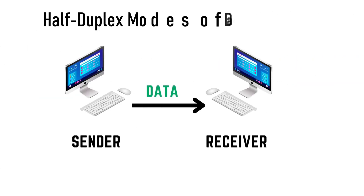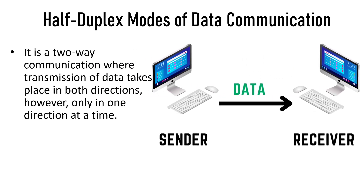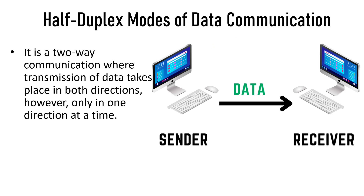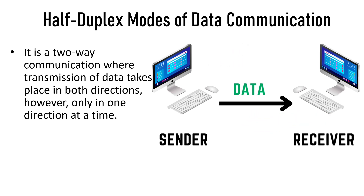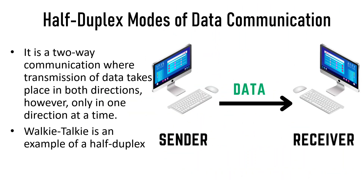Half duplex is a two-way communication where the transmission of data takes place in both directions, however only in one direction at a time. While the sender is transmitting data, the receiver cannot transmit at the same time. After the sender completes sending the information, only then can the receiver transmit. The walkie talkie is an example of half duplex mode of data communication.